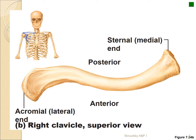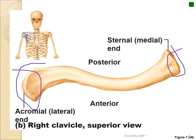Here's a clavicle. It's a flat bone, which means it develops by intramembranous development. What you need to do is recognize it, and also know the medial part, which connects to the sternum — basically the manubrium — and the lateral part, which attaches to the acromium.